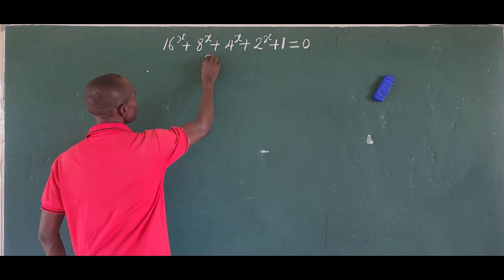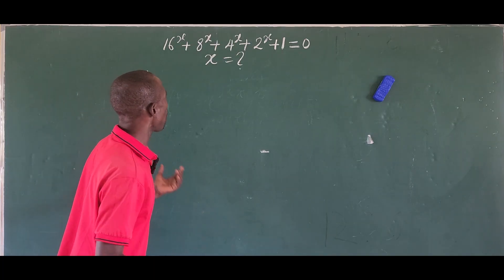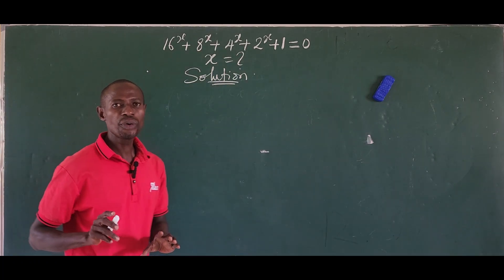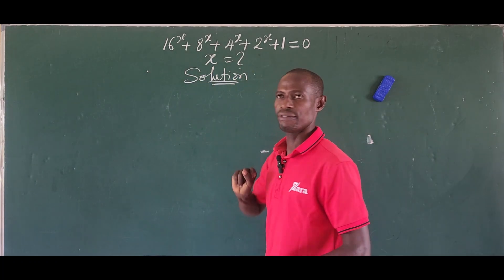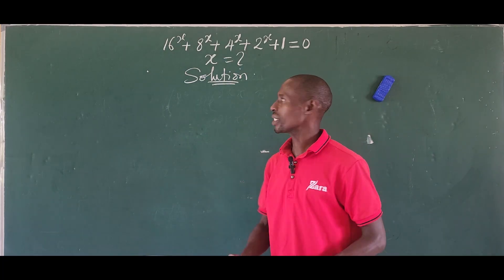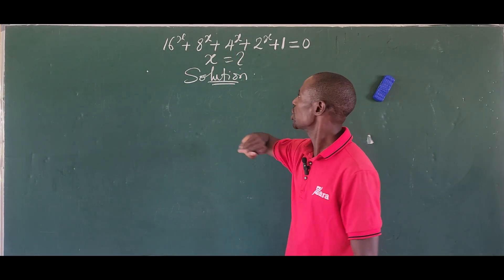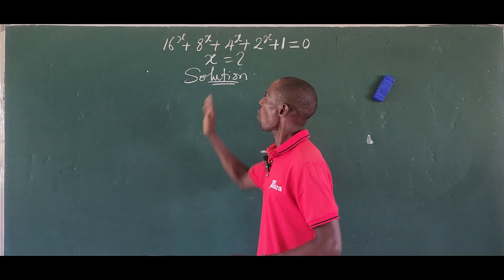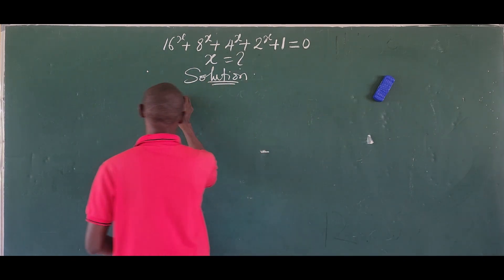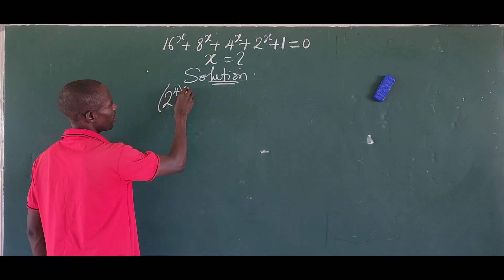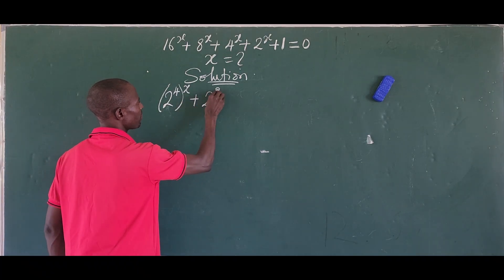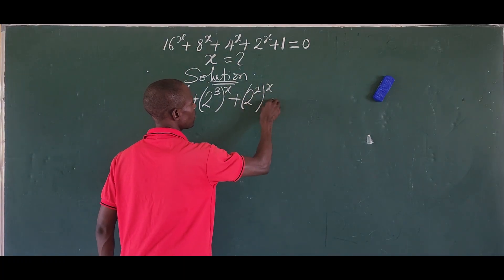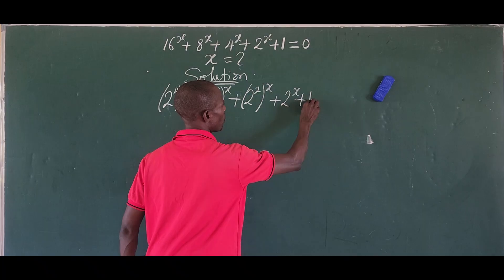So let's take our solution. We're looking for the value of x. The beauty of this question is that 4 can be expressed in base 2, 8 can be expressed in base 2, and 16 can be expressed in base 2. So let's go ahead and express all these quantities in base 2. This gives us 2 to the power of 4 raised to the power of x, plus 2 to the power of 3 raised to the power of x, plus 2 to the power of 2 raised to the power of x, plus 2 to the power of x, plus 1, equal to 0.